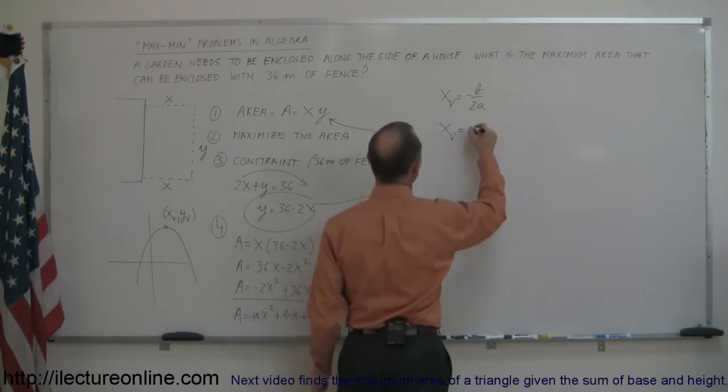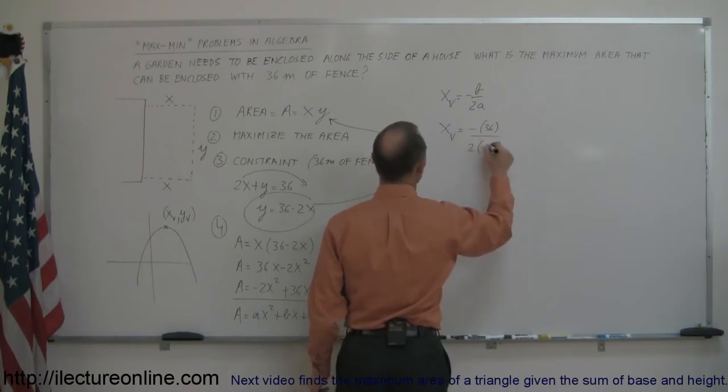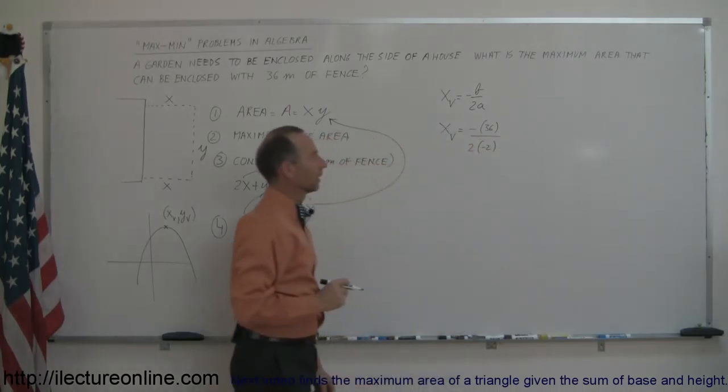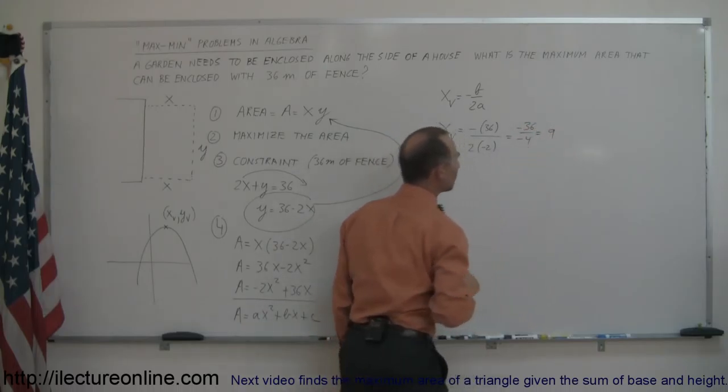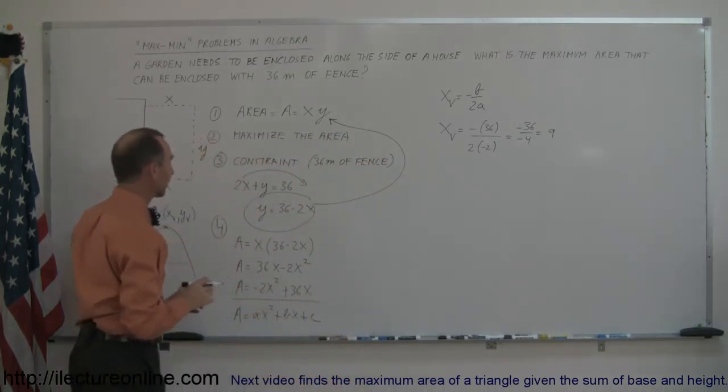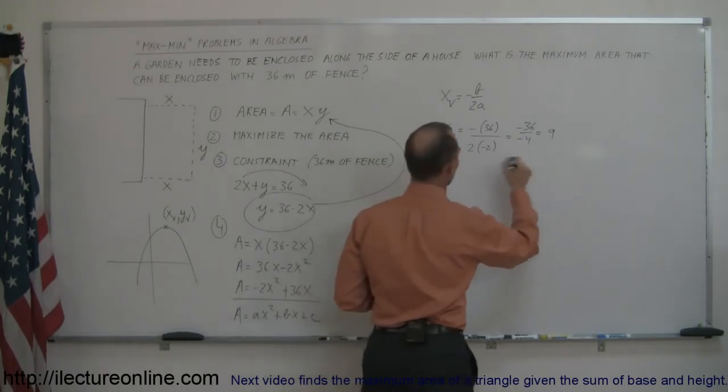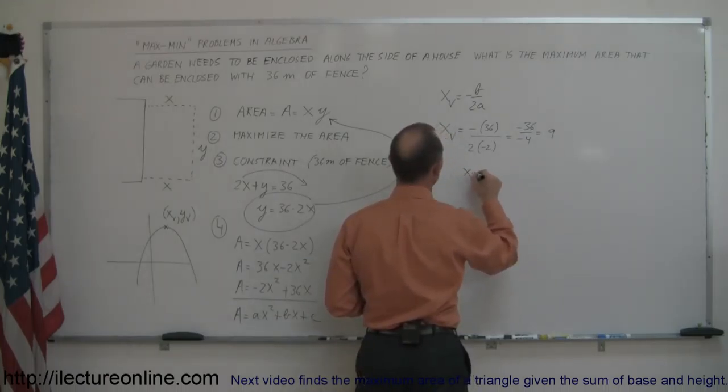So we can say that x sub v is equal to minus b, and b is 36, that's minus 36 divided by 2 times a, which is minus 2. That gives us minus 36 divided by negative 4, which is a positive 9. Which means that for us to find the largest area, x has to be 9. So therefore, we conclude x must equal 9.